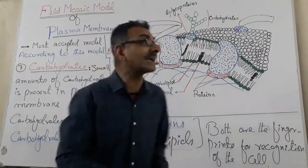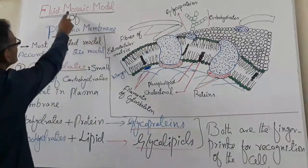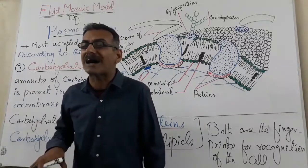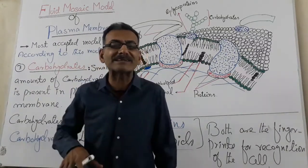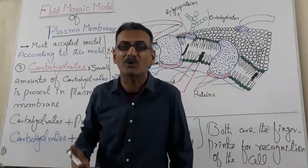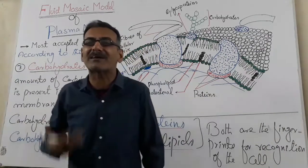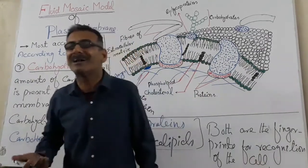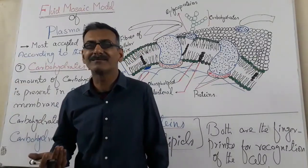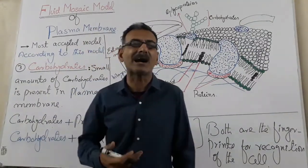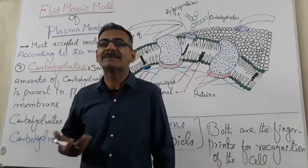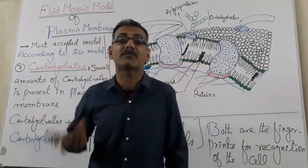The term 'mosaic' means a pattern composed of many different individual items, because many types of molecules are arranged in a specific manner in the plasma membrane. And so we give the name of this model as the fluid mosaic model.